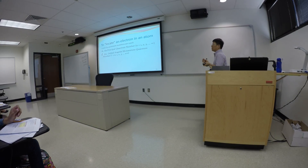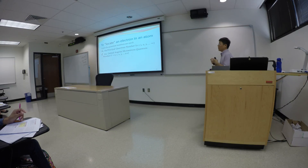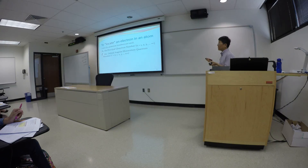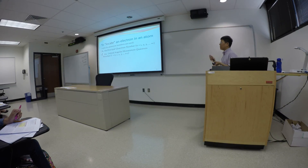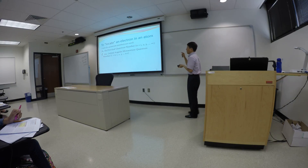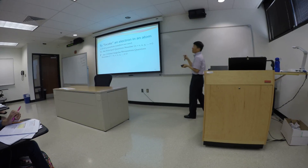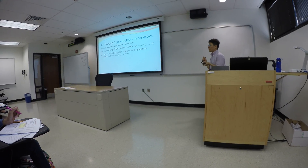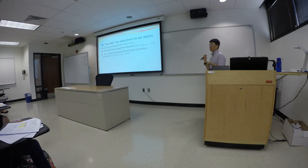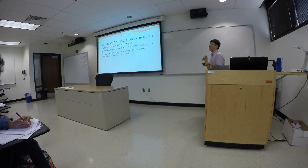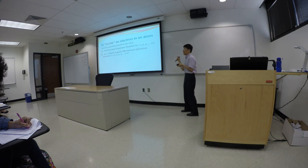Within each n, there are more than one sub-levels, and we call it the orbital angular momentum quantum number. We use an italicized l to represent that quantity. There is a relationship between n and l: n starts with one, l starts with zero, and l goes all the way up to n minus one.